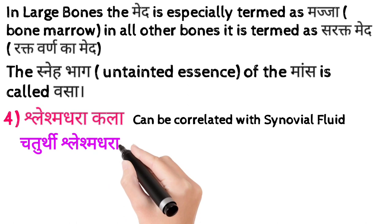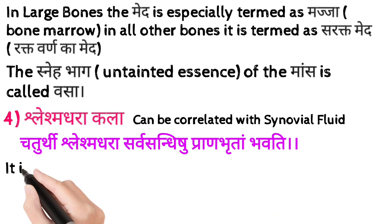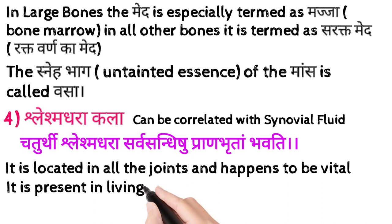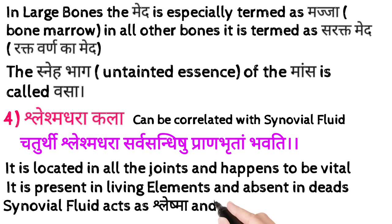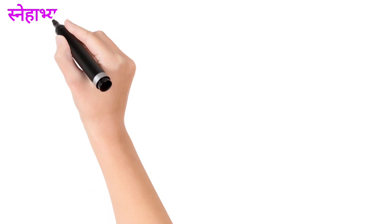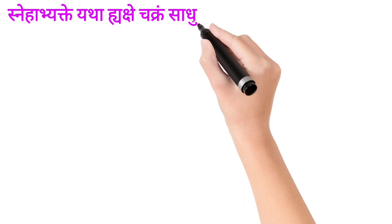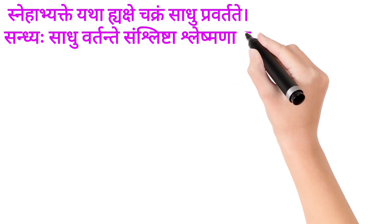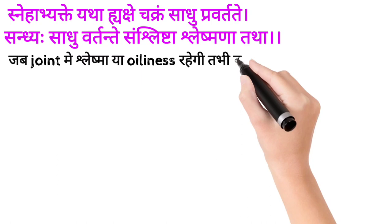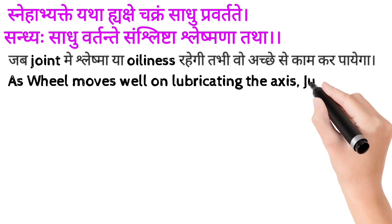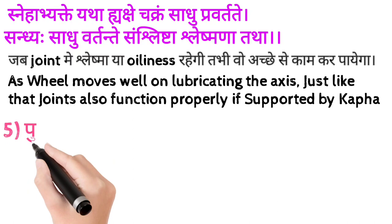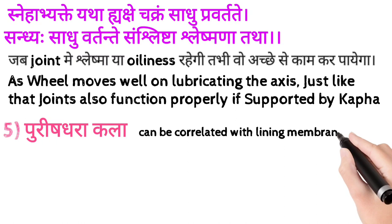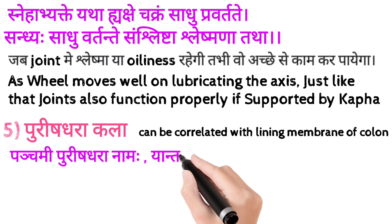Here is our fourth Kala which is Shleshma Dharakala. This can be correlated with synovial fluid in our body. Its shloka says it is located in all the joints and is vital — present in living elements and absent in the dead. The second shloka correlates it with the lubrication of a wheel: as a wheel moves well by lubricating the axis, joints also function properly if supported by Kapha.